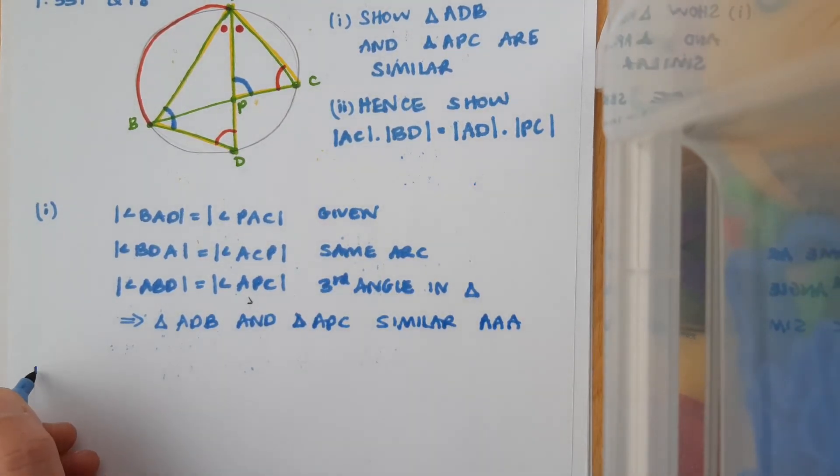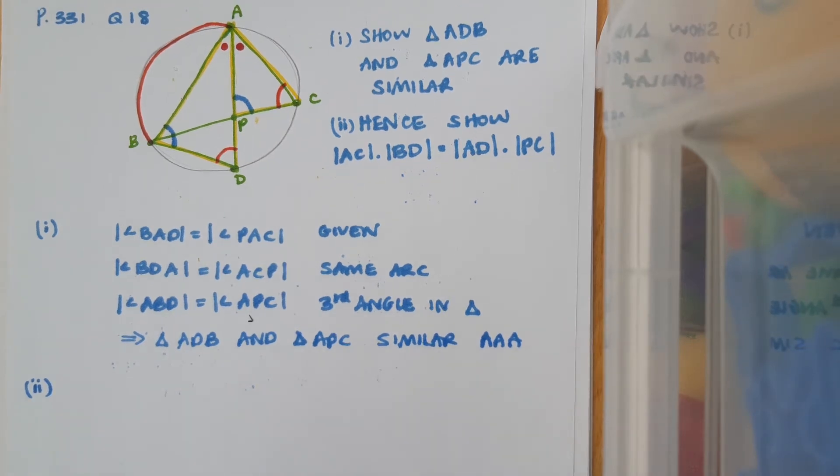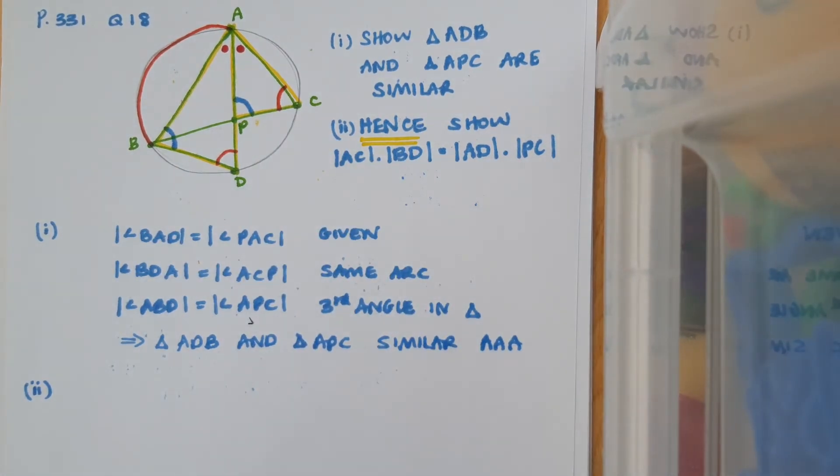Part two is, hence show that AC by BD equals AD by PC. Now, don't forget that if I'm seeing the word hence in my question, it means that I want to use what I've done up until this point. So just bear that in mind generally in maths problems.